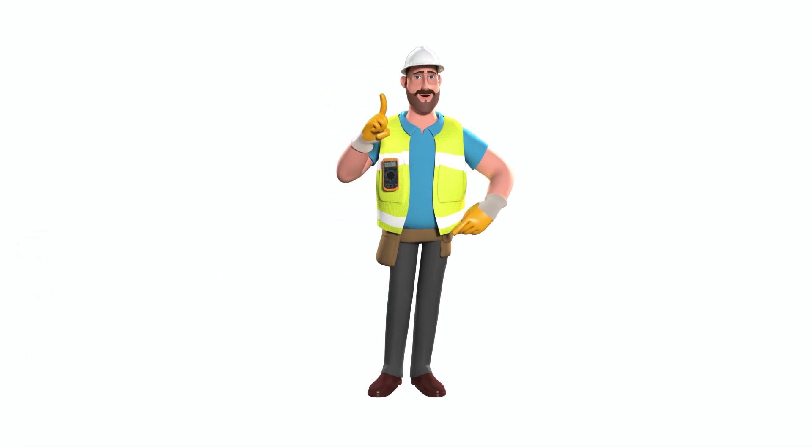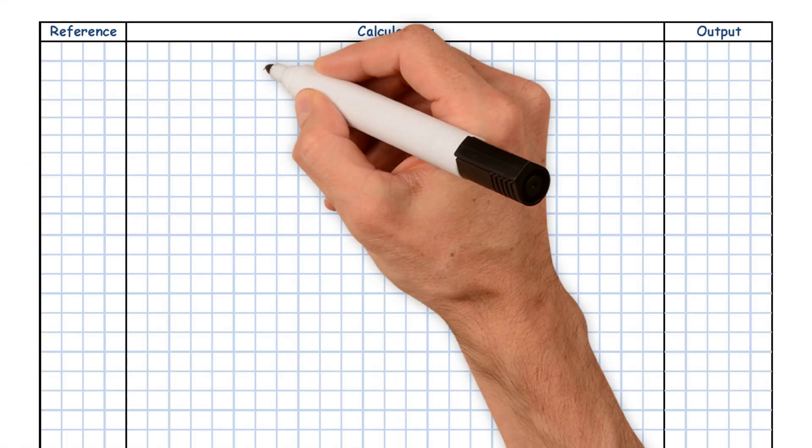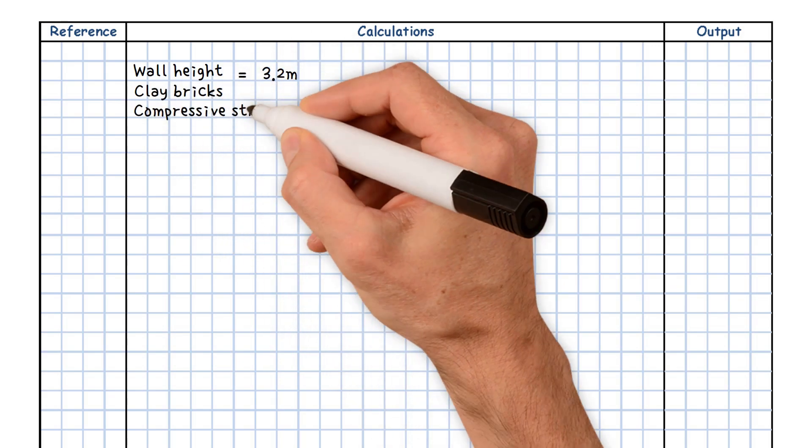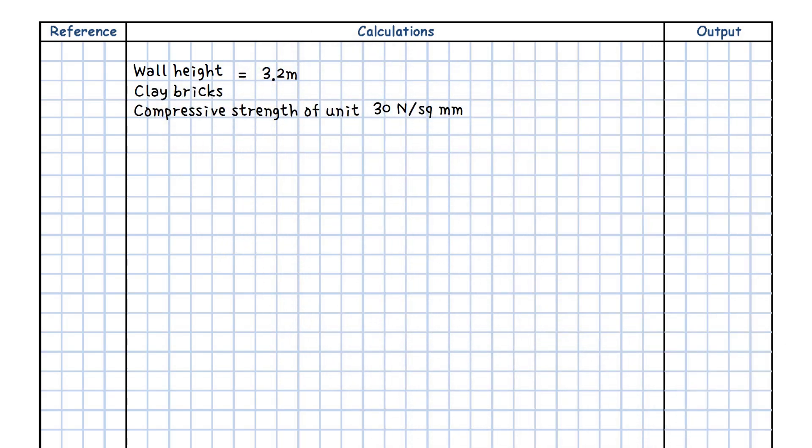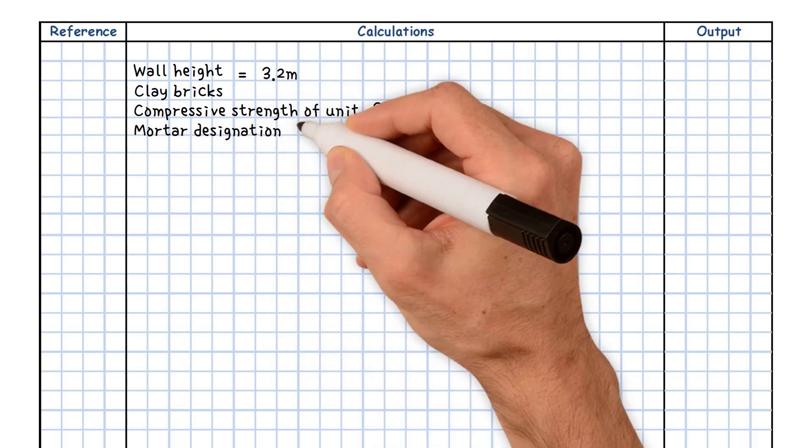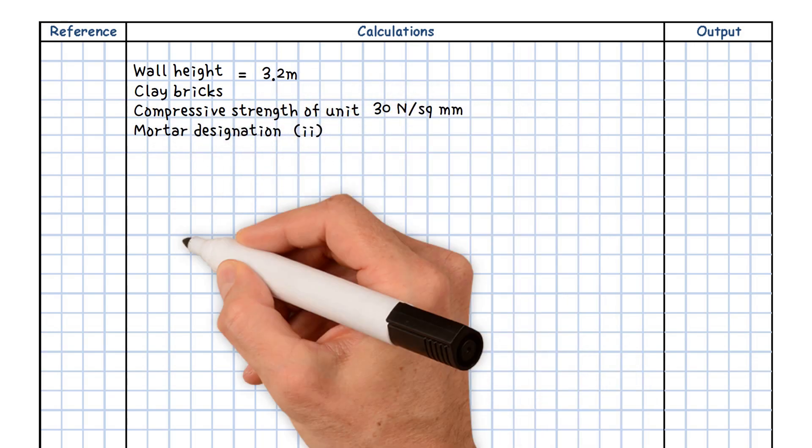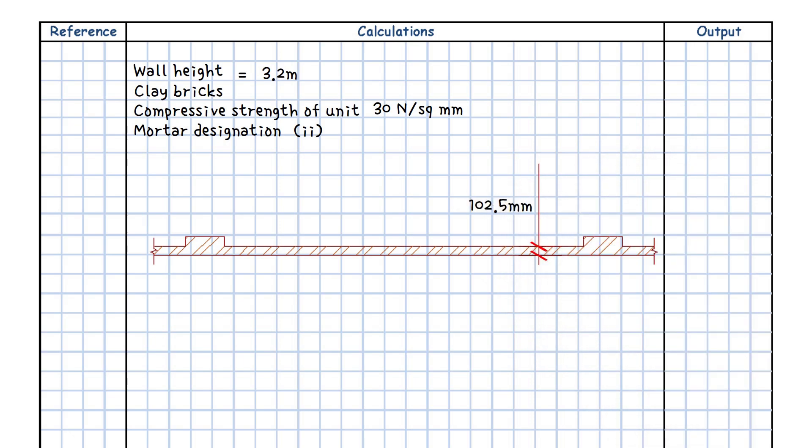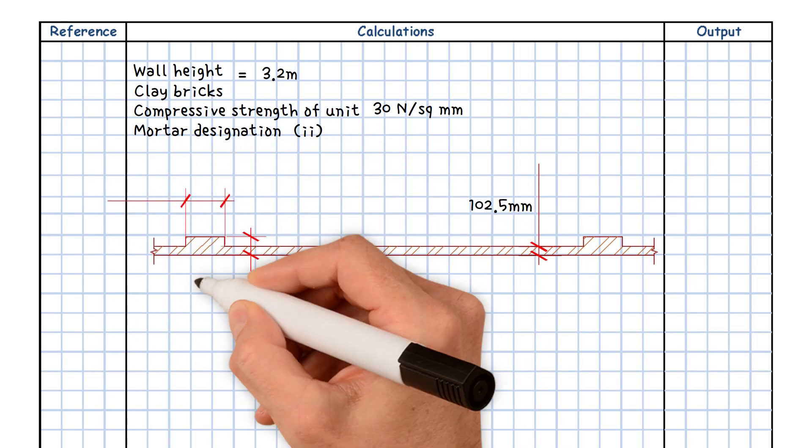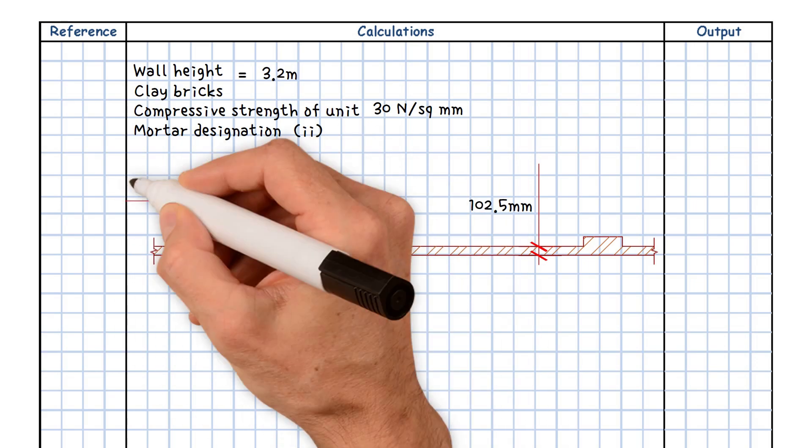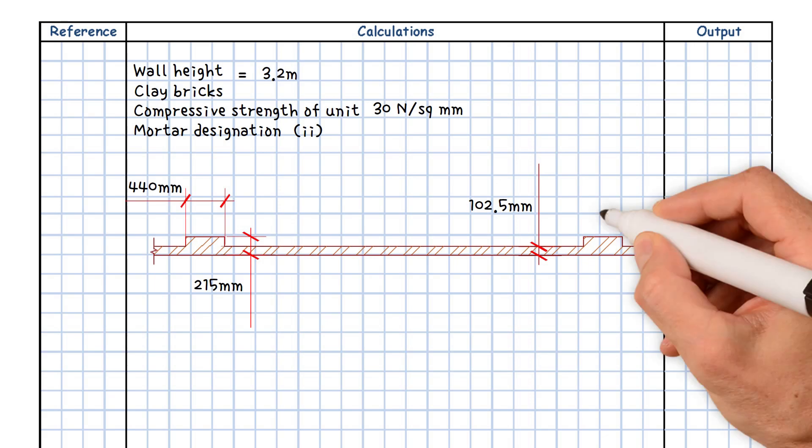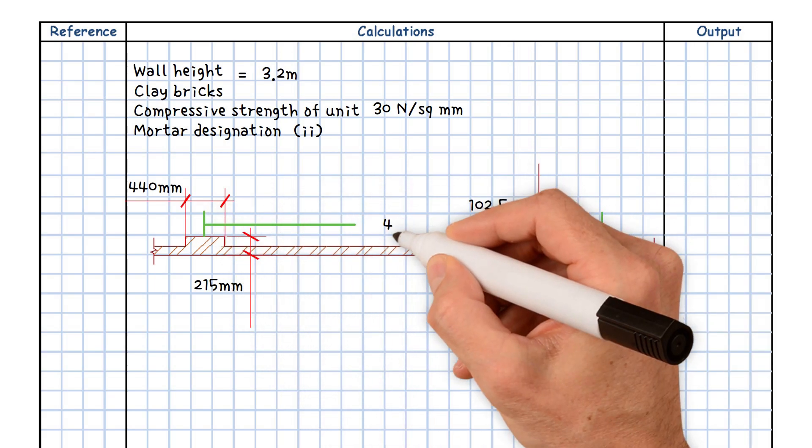We will start with a worked example. We have a 3.2 meters wall height that is made of clay bricks with a compressive strength of 30 newton per square millimeters and a mortar designation of type 2. The thickness of the wall is 102.5 millimeters. The pier's thickness and breadth are 215 millimeters and 440 millimeters, respectively. The distance between the piers is 4.5 meters.